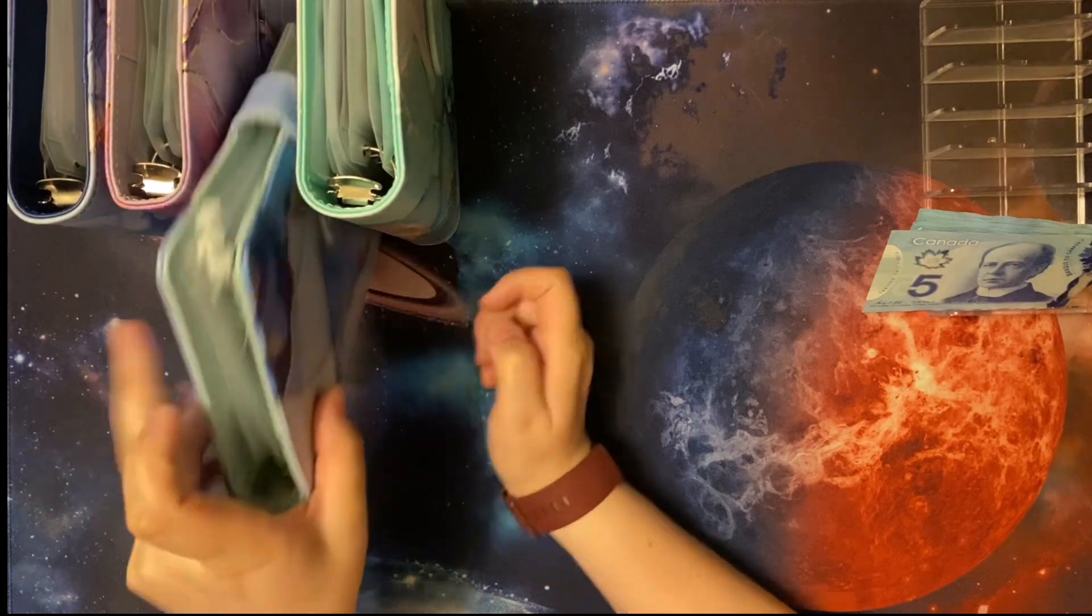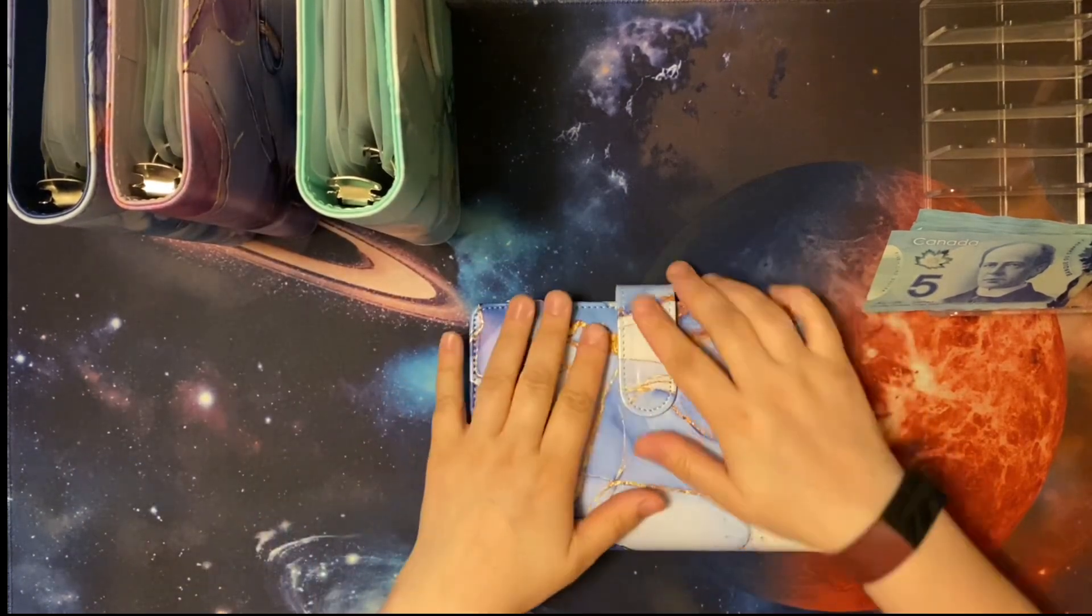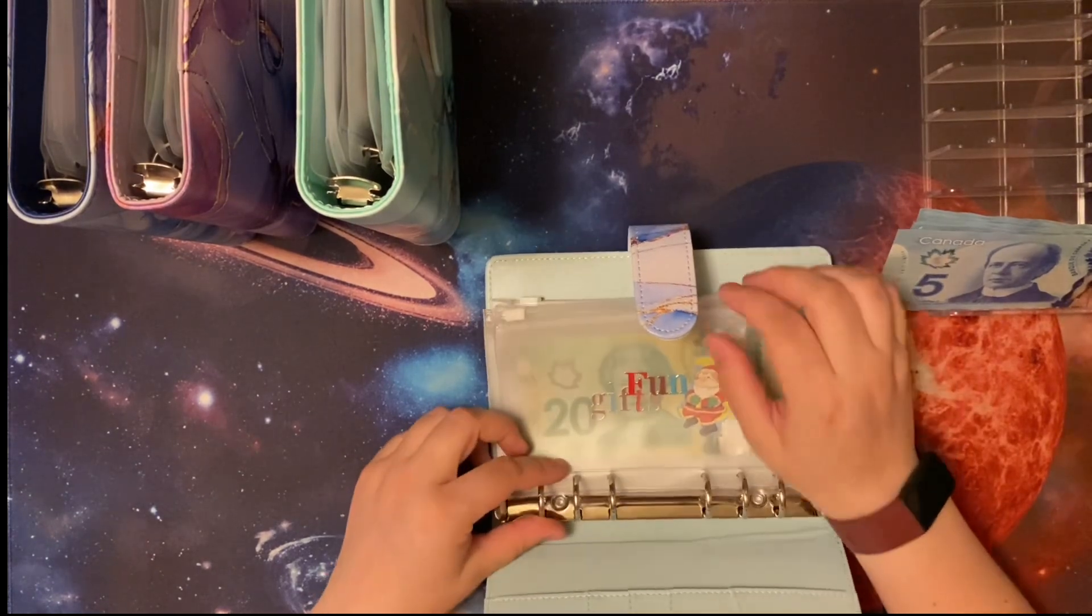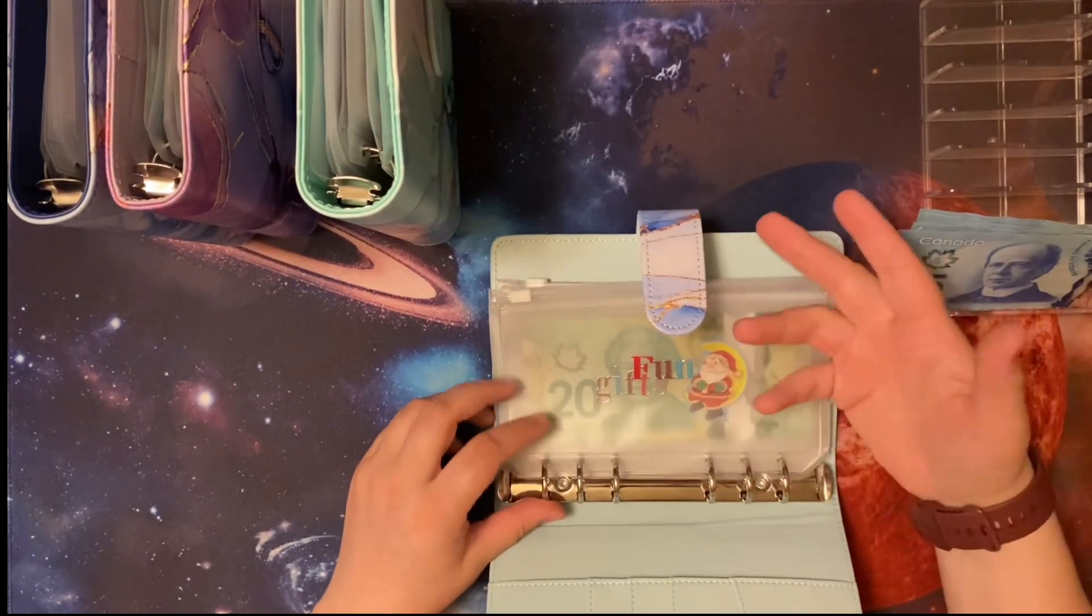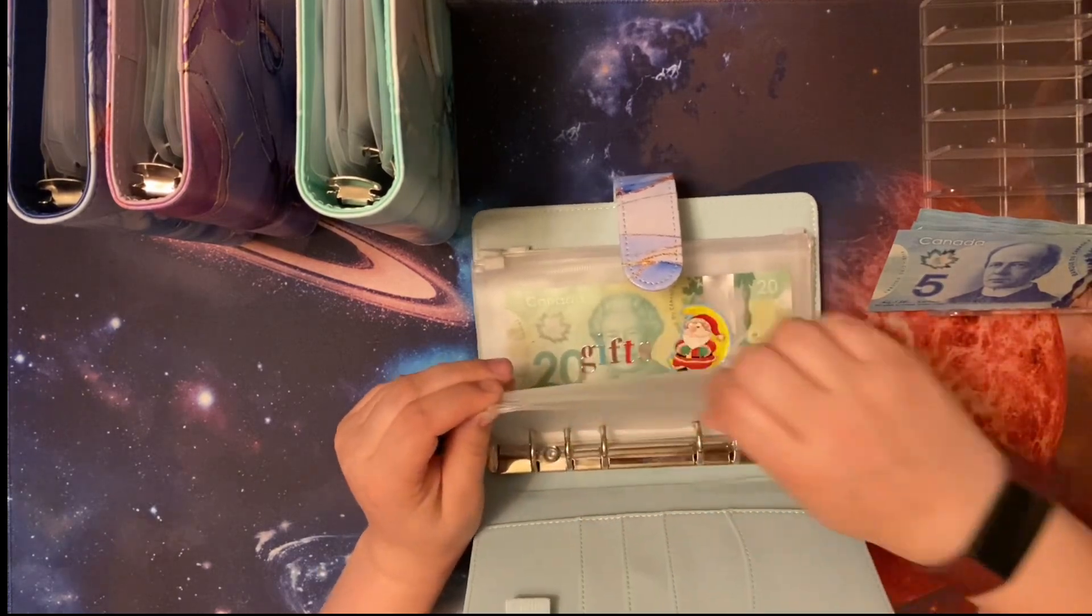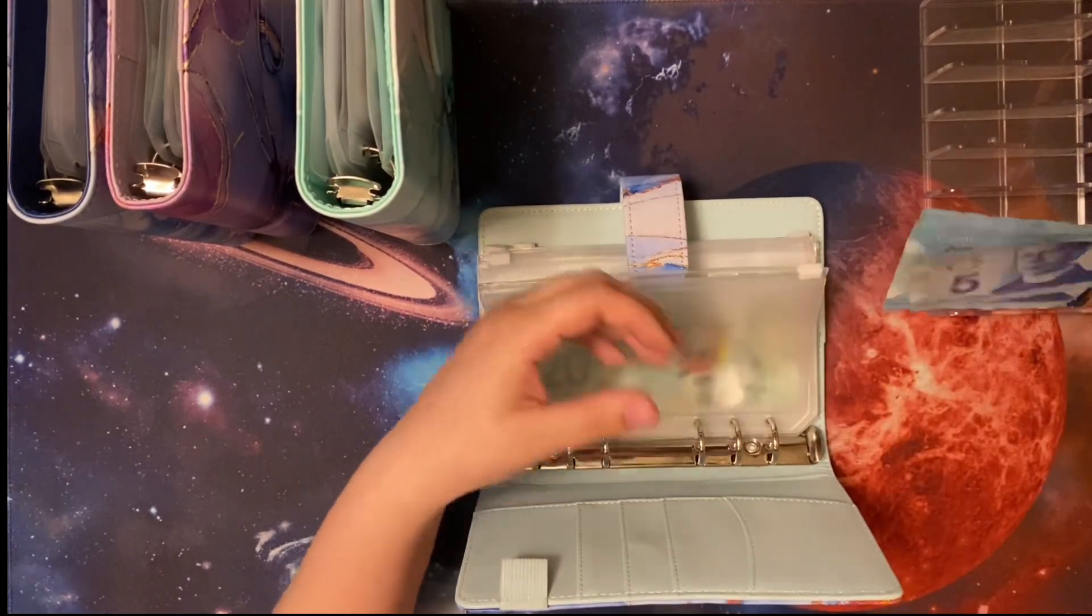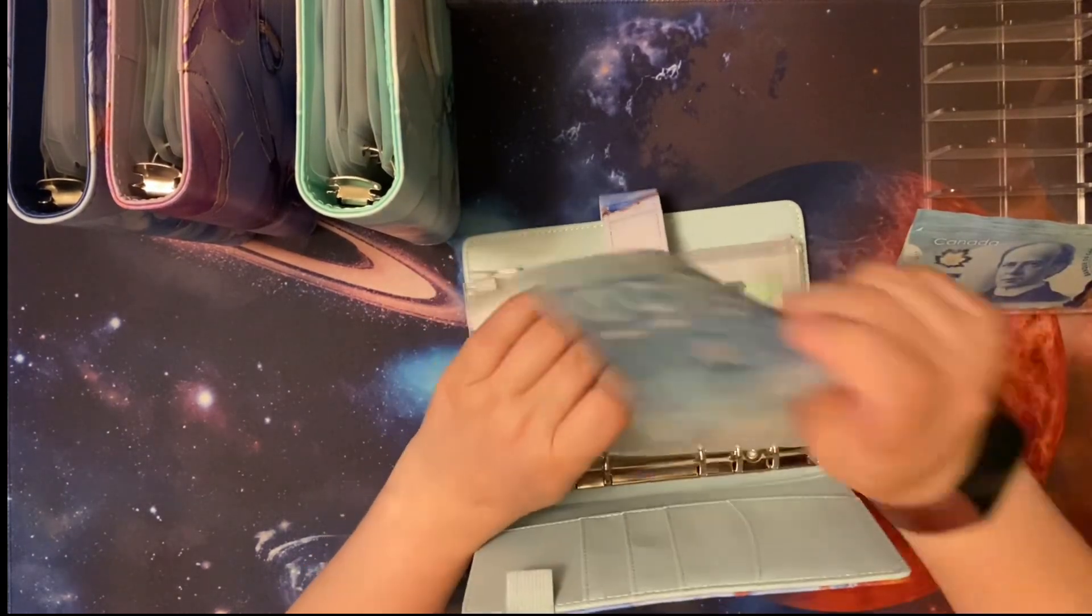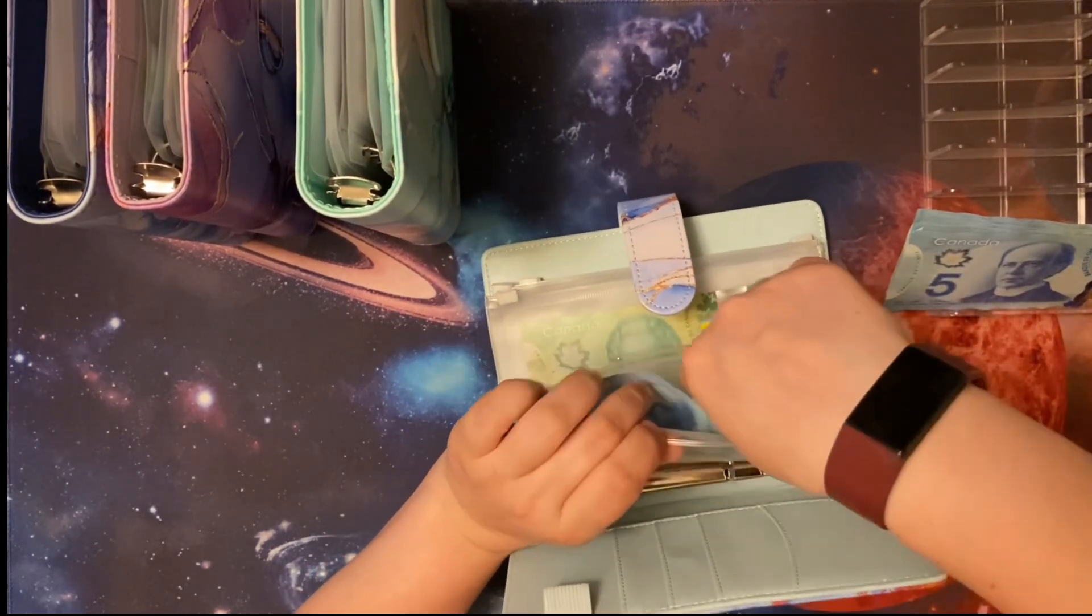The next one is my sinking funds. These are funds that you add to in order to save up for something you can't pay for all at once. I will be adding $10 to fun, and that is for my son to go swimming. It's $5 a time.